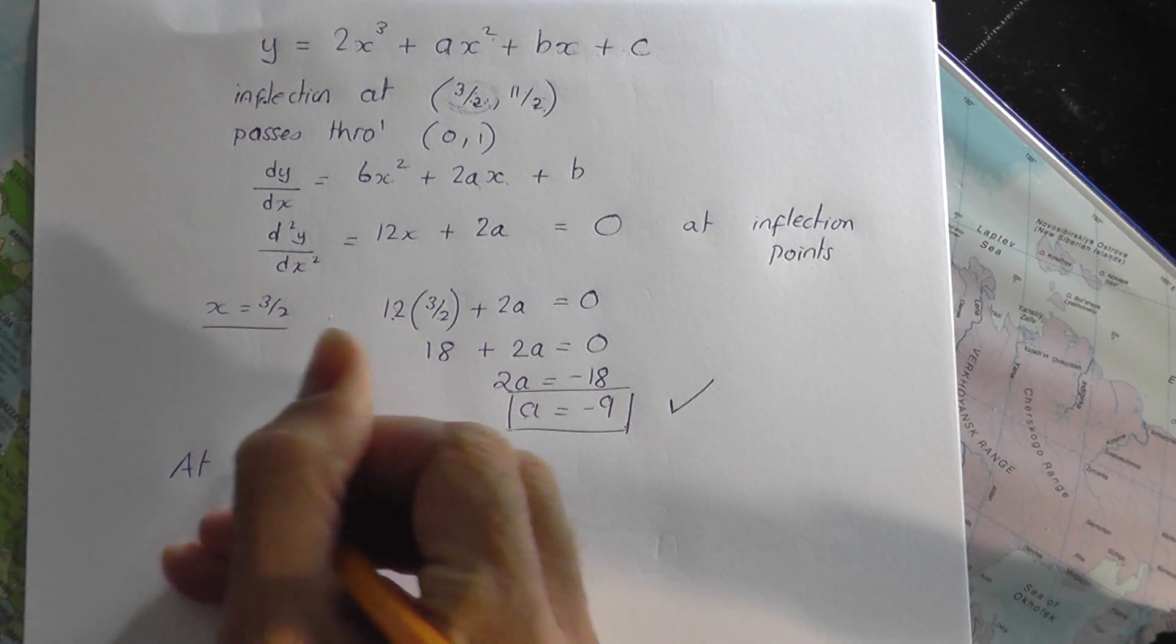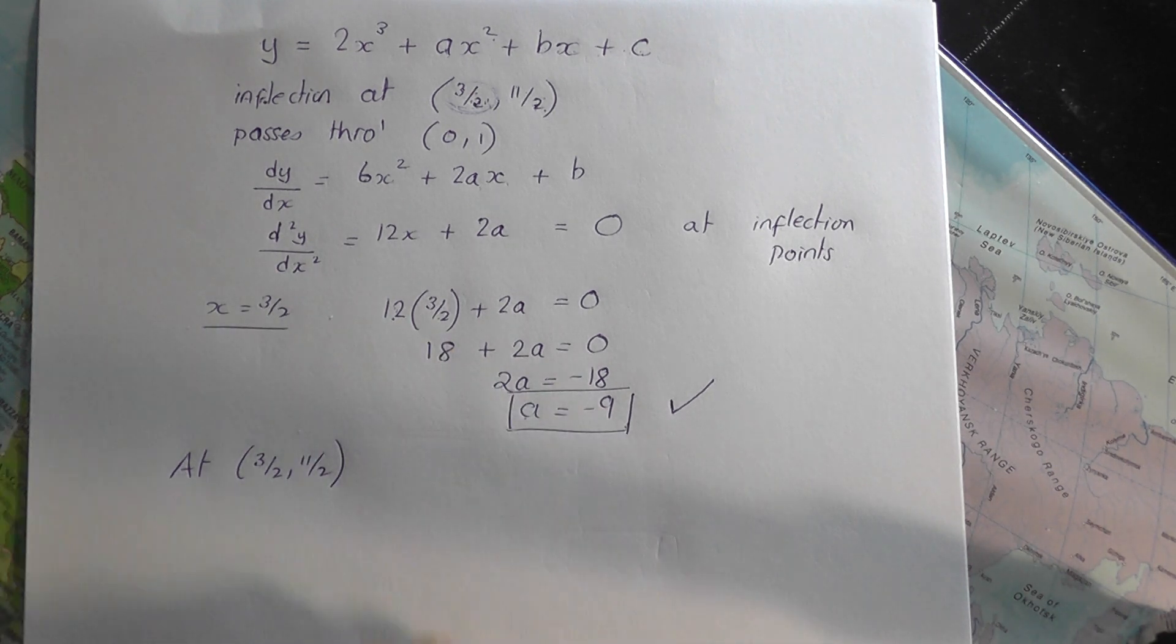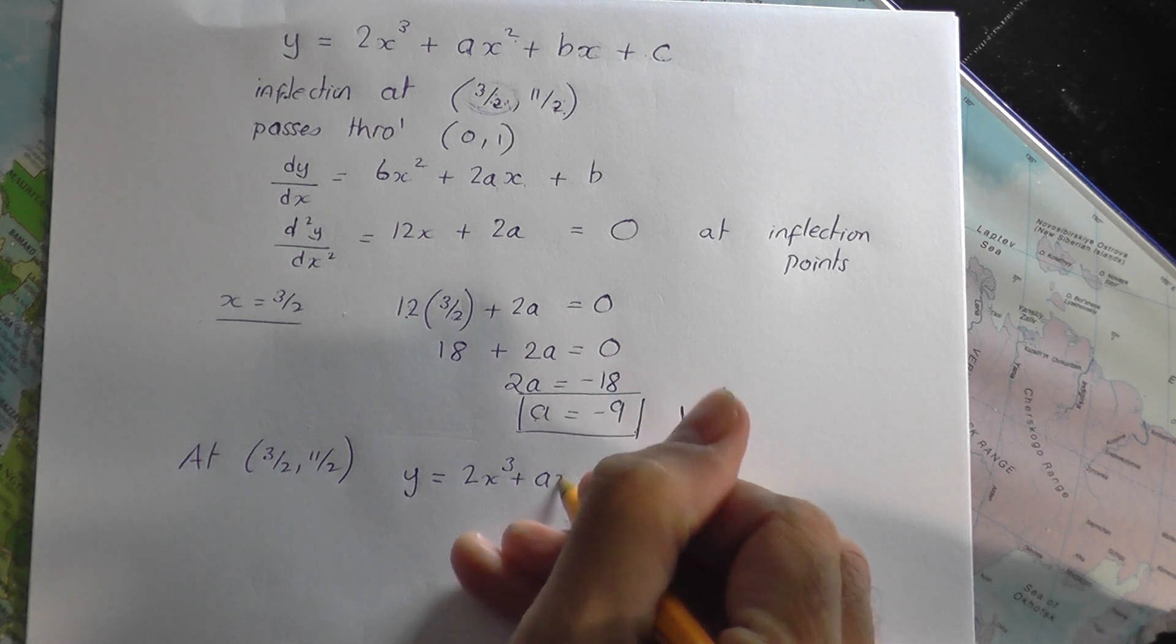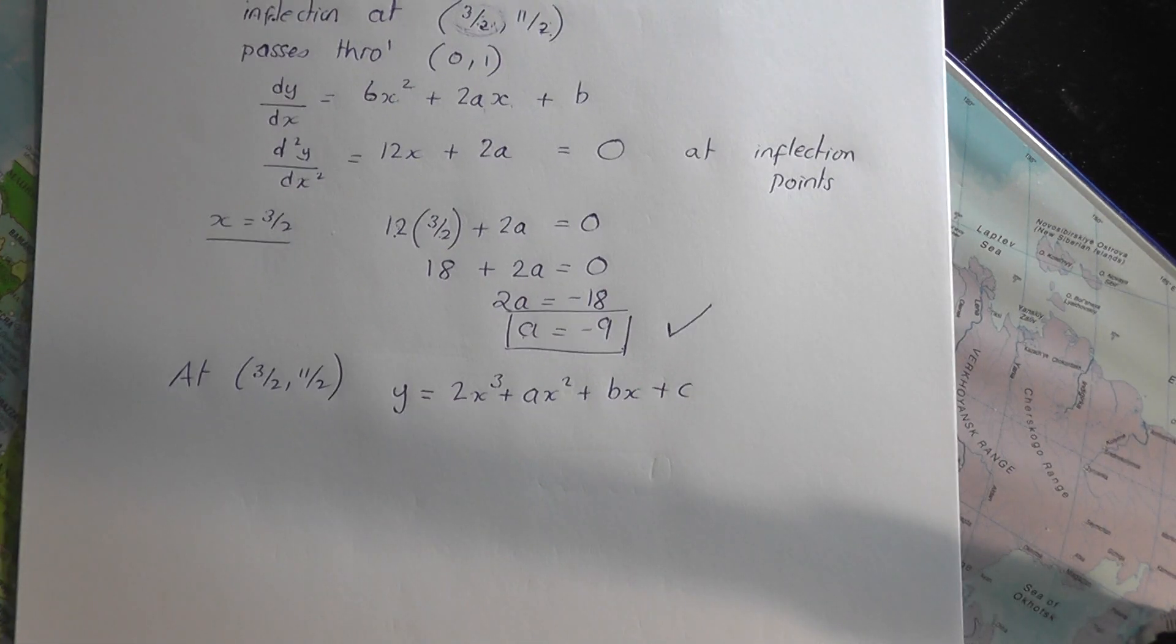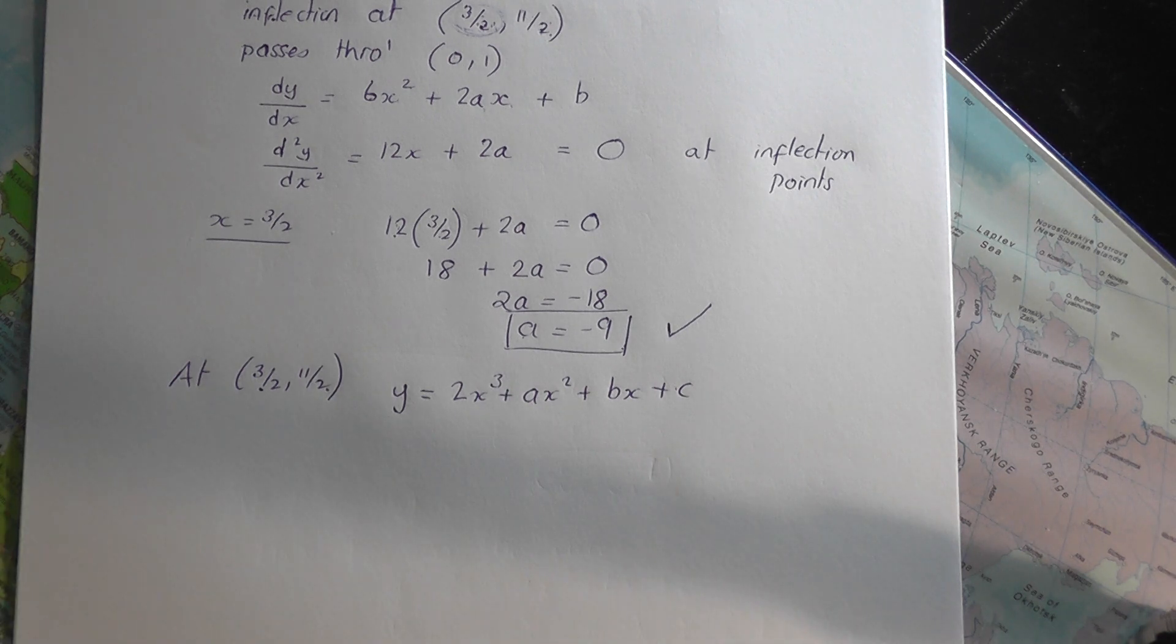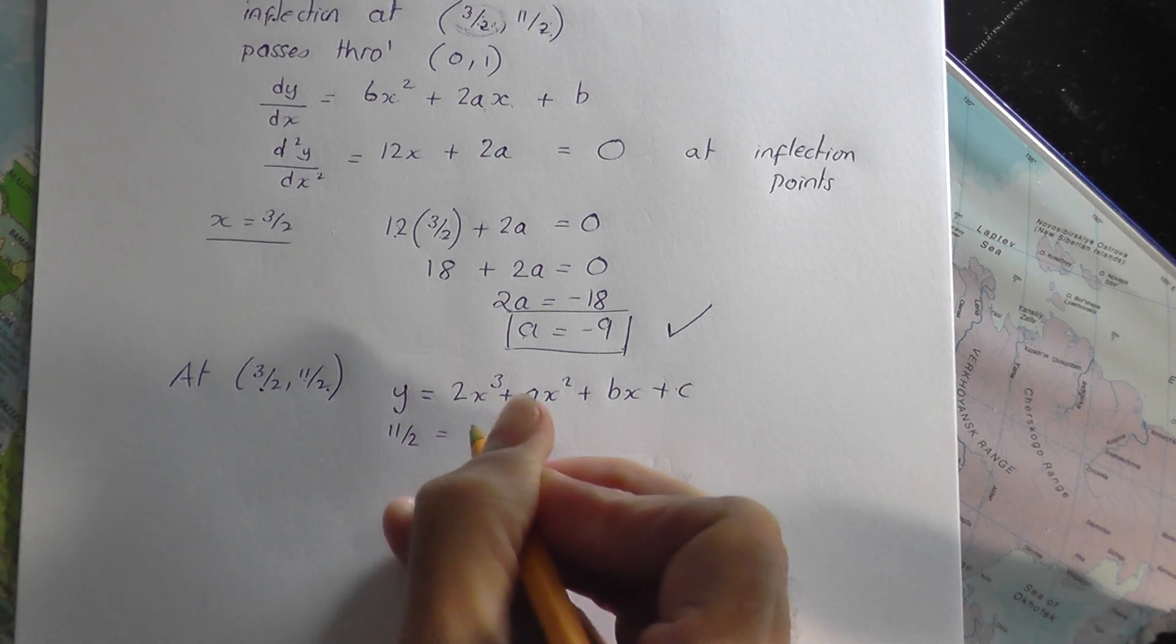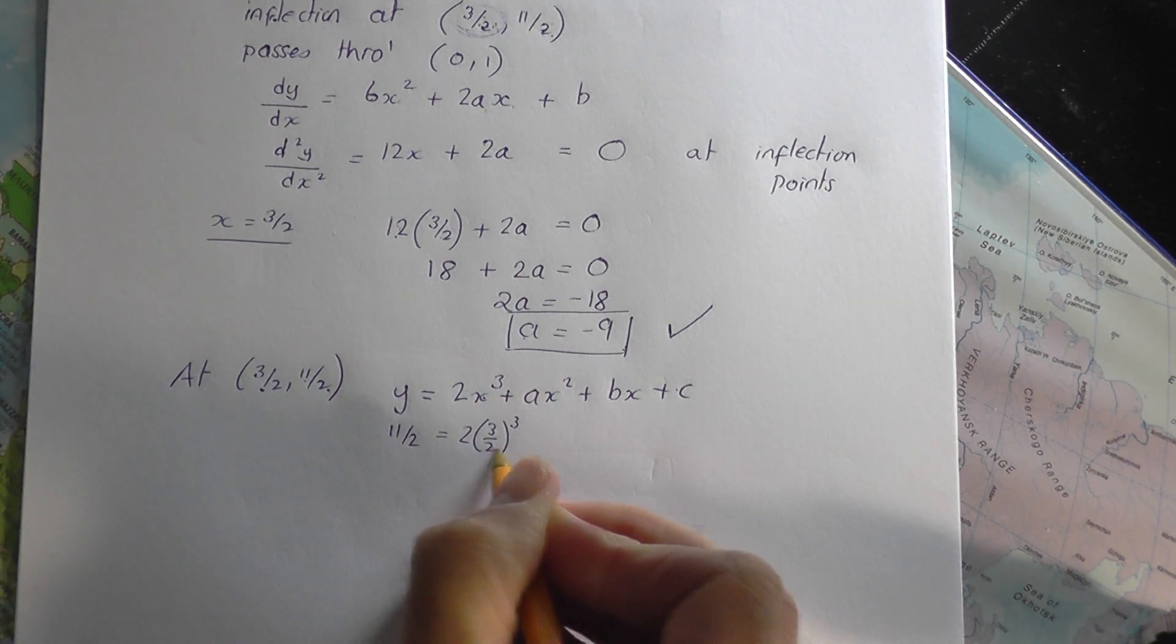So, what I'm going to do now is say, at 3 over 2, 11 over 2, I'm going to take the equation of the curve, which is this, and I'm now going to substitute in these values into this and the resulting statement will hopefully give us some information about a and b and c. So, here we go. y, that's 11 over 2, equals two lots of 3 over 2 cubed. x is 3 over 2.